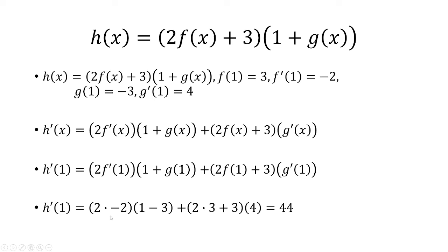A common mistake is to incorrectly apply the product rule by taking 2 times f prime of 1 plus 3, times 1 plus g prime of 1. That would give you an answer of 47, which is incorrect. Be careful of that.